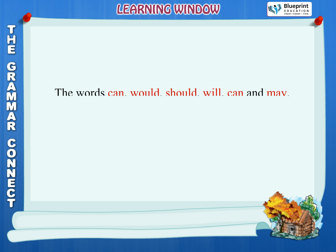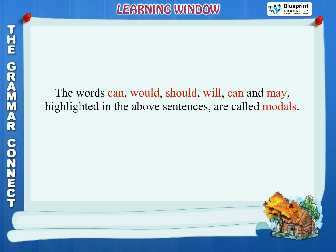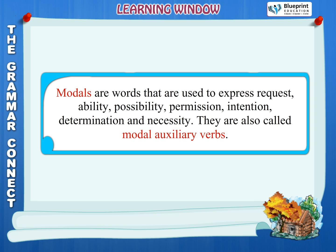Learning window. The words can, would, should, will, can and may highlighted in the above sentences are called modals. Modals are words that are used to express request, ability, possibility, permission, intention, determination and necessity. They are also called modal auxiliary verbs.